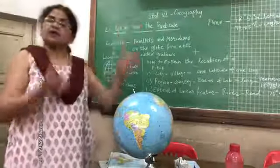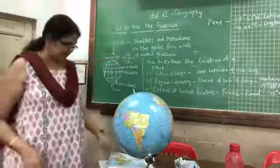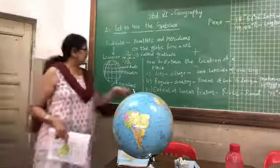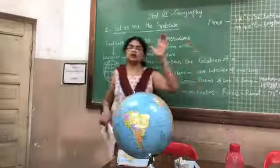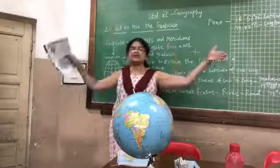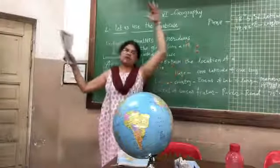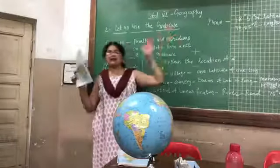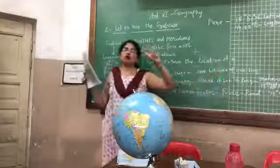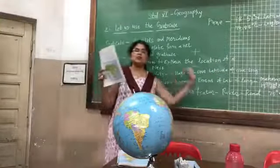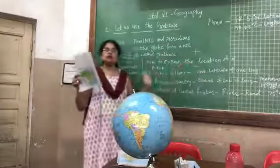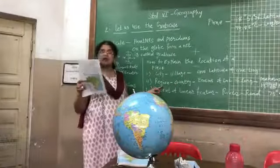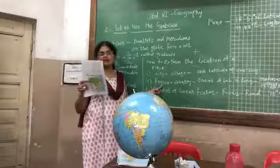Above the tropical zone we have subtropical countries, then temperate, and then the polar region. This is how the world is divided by different types of latitudinal locations. When giving the extent of a region, I have to give between what latitudes it lies — for example, 10 degrees to 12 degrees North and 15 degrees to 20 degrees South — so it has a length and breadth, requiring two coordinates.